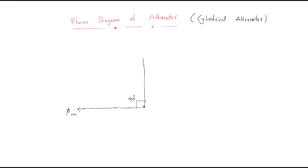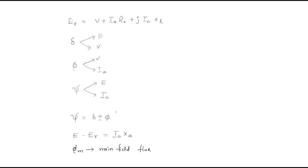For any machine, after the delta angle, the terminal voltage will be developed. This is the terminal voltage vector. Delta is the angle between the open circuit voltage and the terminal voltage — this angle is named as the load angle or power angle.